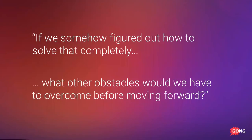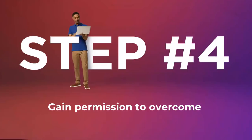After you've gone through the first two steps, your next move is to say: 'If we somehow figured out how to solve that issue completely, what other obstacles would we have to overcome before moving forward?' If they start voicing other obstacles, chances are those are more important objections to address. If they don't have any other obstacles, then the initial objection is the true one and you've successfully isolated it.